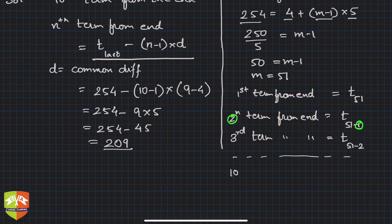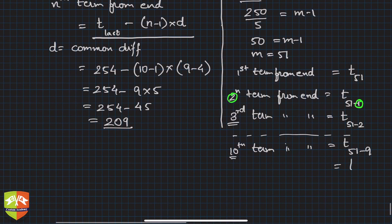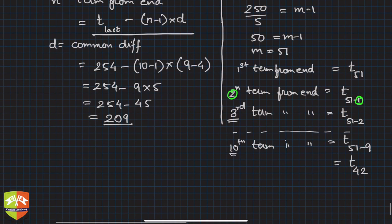I'm not going to write down all those till 10 terms. You can quickly observe that 10th term from end will be simply t_51 minus 9, one less than whatever is appearing here. Which is nothing but t_42. So the 42nd term from the beginning is the 10th term from the end.